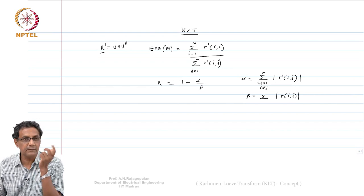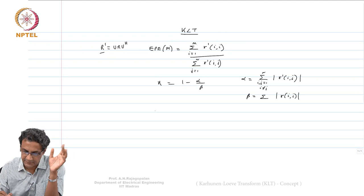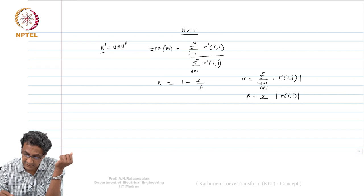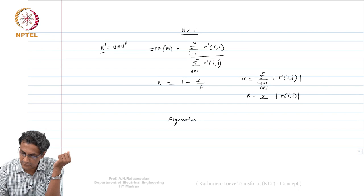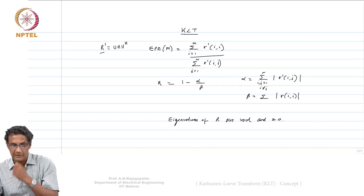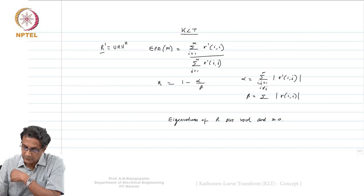You all know that if R has complex entries, the eigenvalues of R are real and are greater than or equal to 0, because R is a positive semi-definite matrix — it is a kind of a covariance.